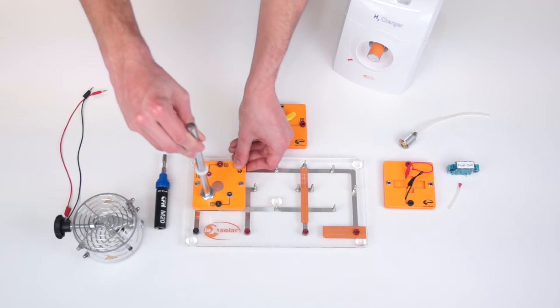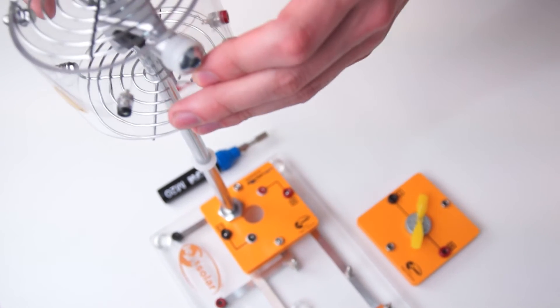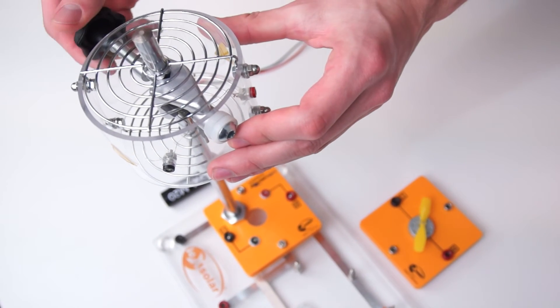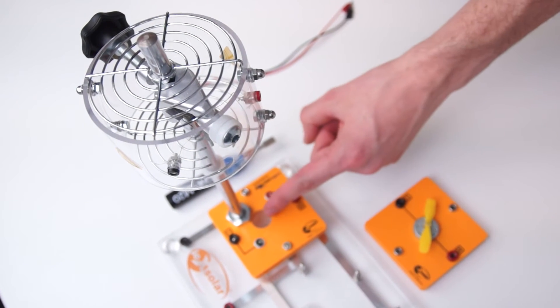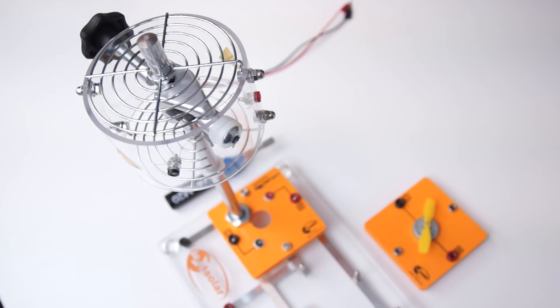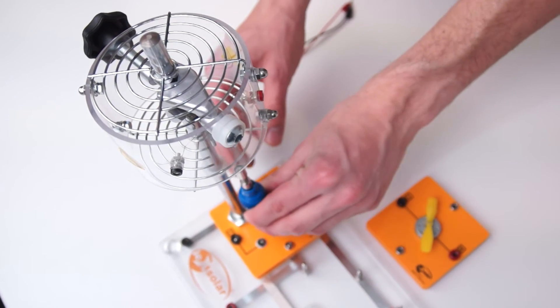Then we fix the SOFC fuel cell with the plexiglass protection to the stand. It must be ensured here that the opening of the protection is over the hole of the stand module. We are in fact putting the gas burner in this hole whose flame should warm the fuel cell through the opening.